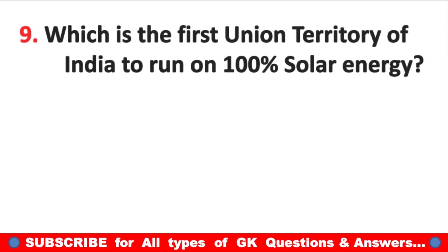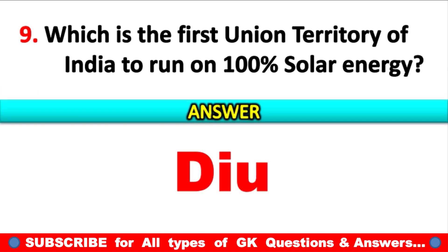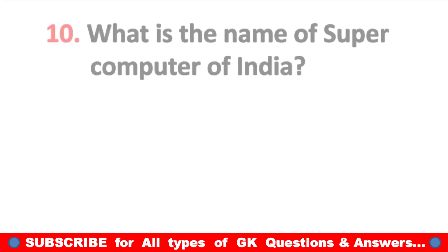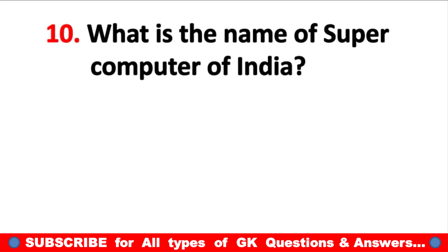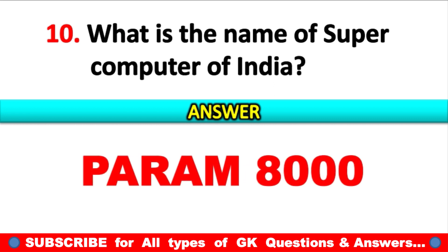Which is the first Union Territory of India to run on 100% solar energy? Answer: Diu. What is the name of the supercomputer of India? Answer: PARAM 8000.